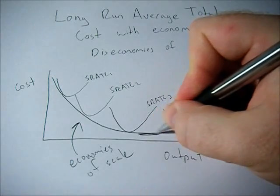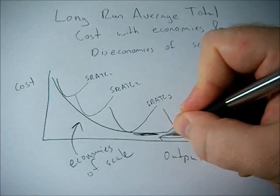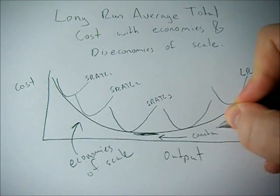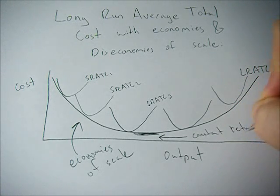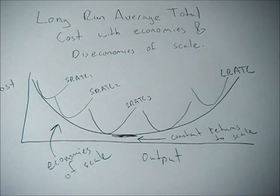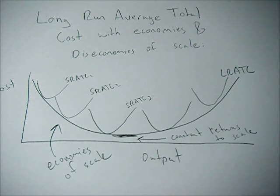At some point, when we increase output, costs remain the same. This is constant returns to scale. It means that if we double all our inputs, we exactly double our outputs. There's no real benefit from increasing the size of our firm because we get constant returns to scale — no advantage is seen in the cost structure.